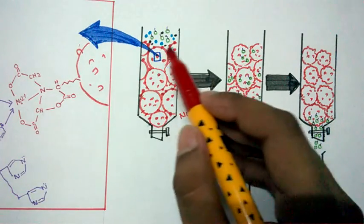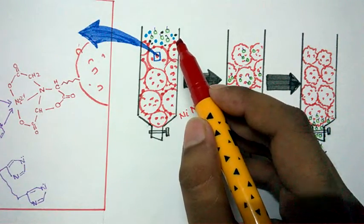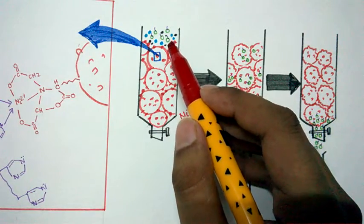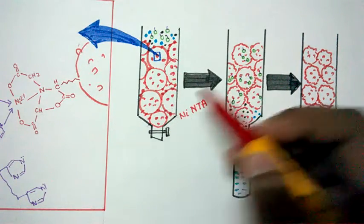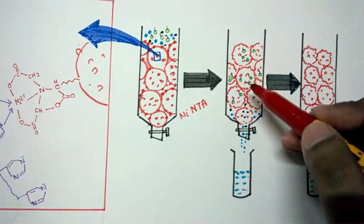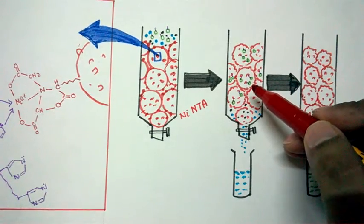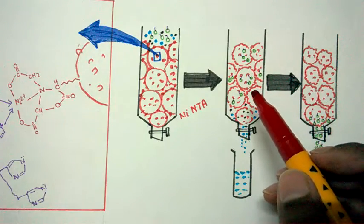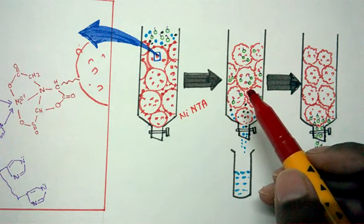So first when we put all the bacterial lysate along with our protein and all non-essential proteins of the bacteria, it would come down this path and only our protein of interest which have this hexahistidine tag would be bound in the matrix.